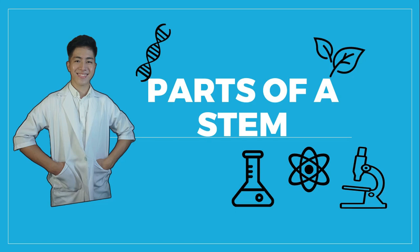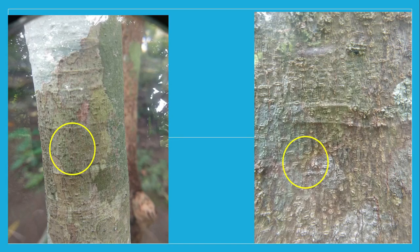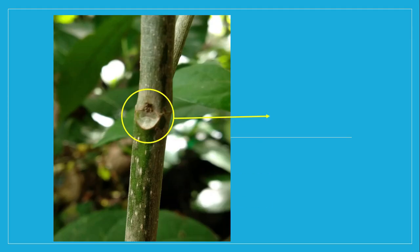The stem is usually composed of the main stem and its branches. It is the part where the leaves are attached. Branching in plants may vary and is responsible for the plant form. There are other structures associated with stems, like lenticels that serve as the breathing organ, and what we call leaf scars and bundle scars. The scar left after a leaf falls is what we call the leaf scar.